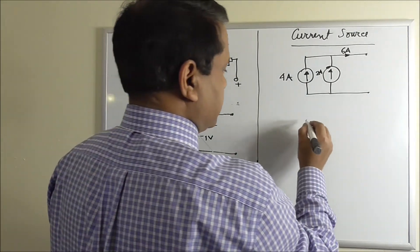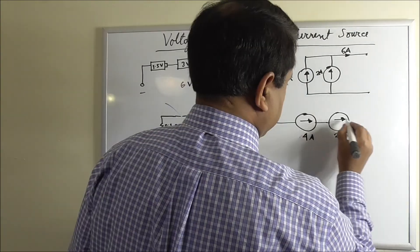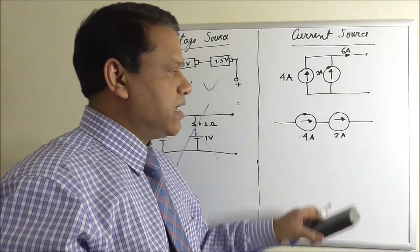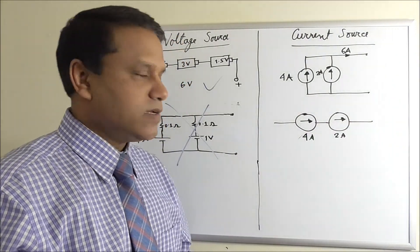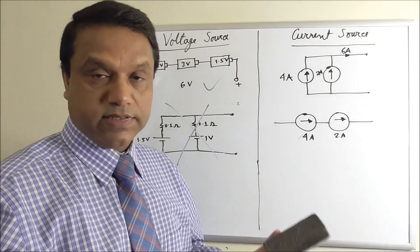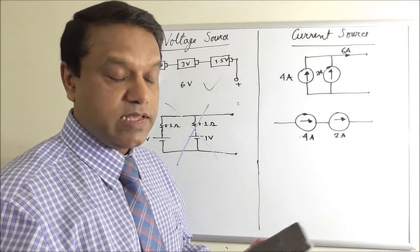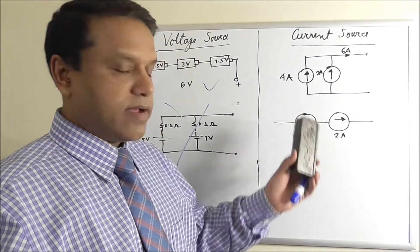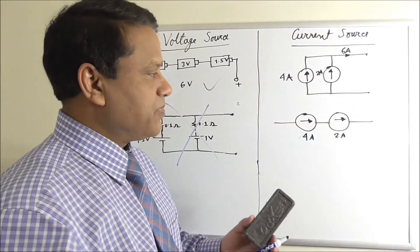If you try to put them in series, now this current source will try to make it 4 ampere current in this branch, and this current source will try to make it 2 ampere current, which is not possible. The same branch cannot have two different currents. So this will basically cause problem in the circuitry of the current sources. They will be damaged.